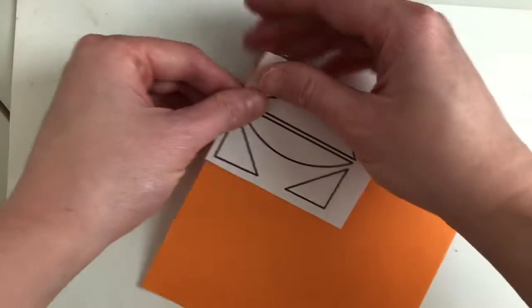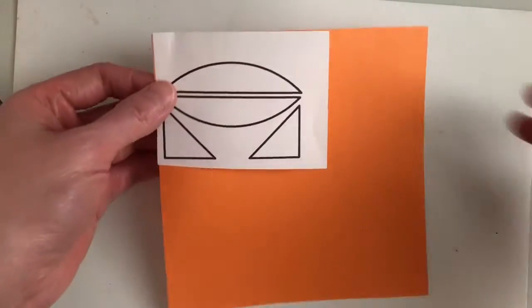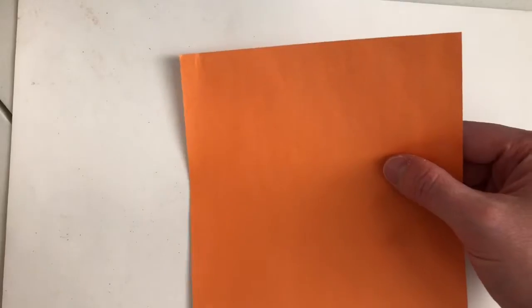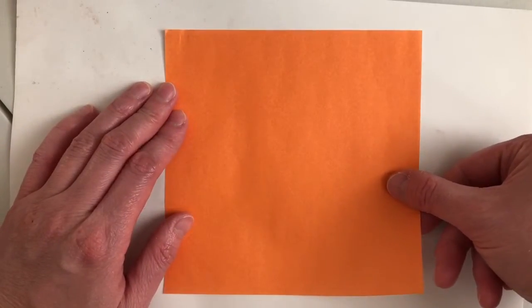First thing we're going to do is remove the paper clip and set aside the white shapes and work just with our origami paper.